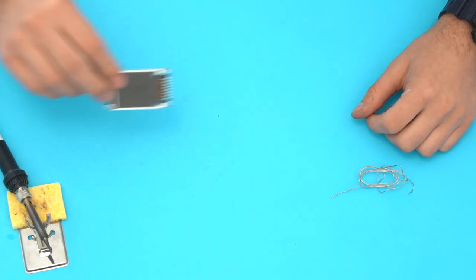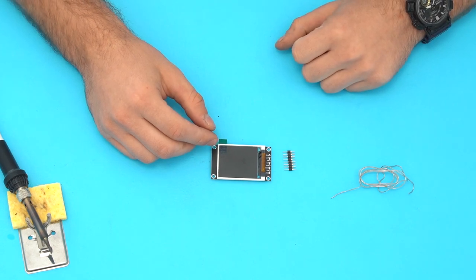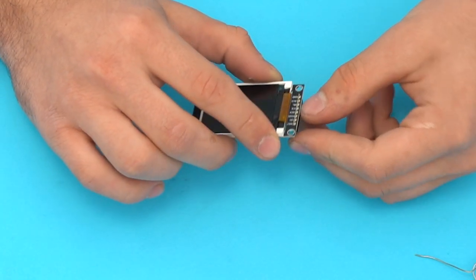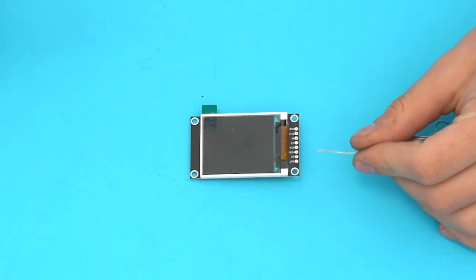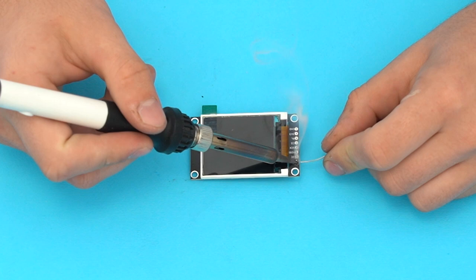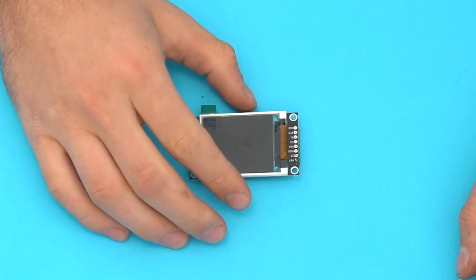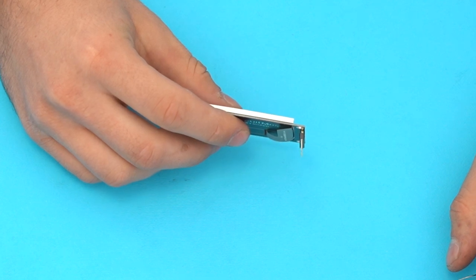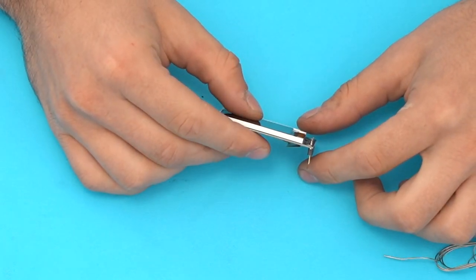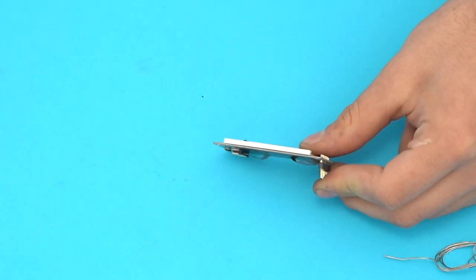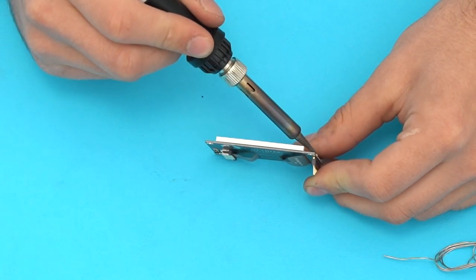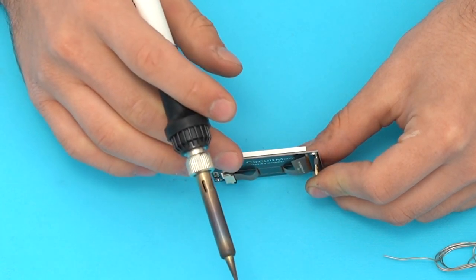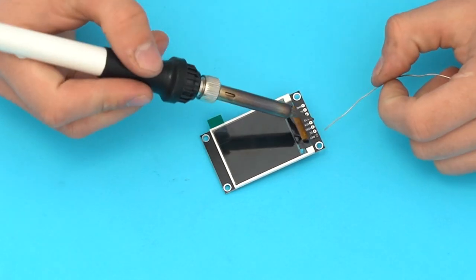Take the display board and the 8 pin header. Insert it through the pin holes and solder just the first pin. Now we need to check if the pins are perpendicular to the display board. If they need to be corrected, take the pins and the display board in one hand and a soldering iron in the other. Adjust the pins while simultaneously melting the solder joint. Try to do so quickly before the pins get hot. Then we can go ahead and solder the rest of the pins.